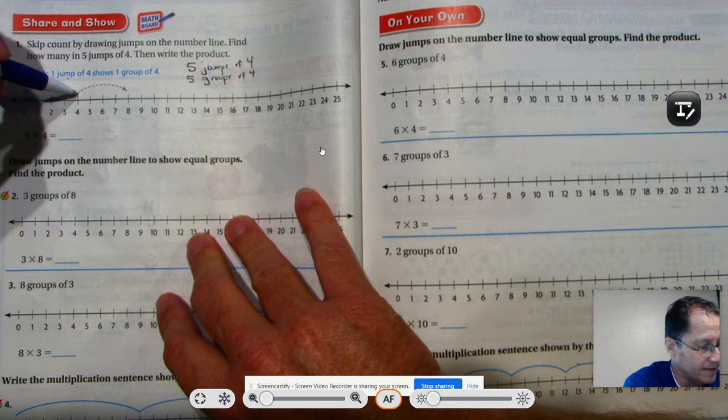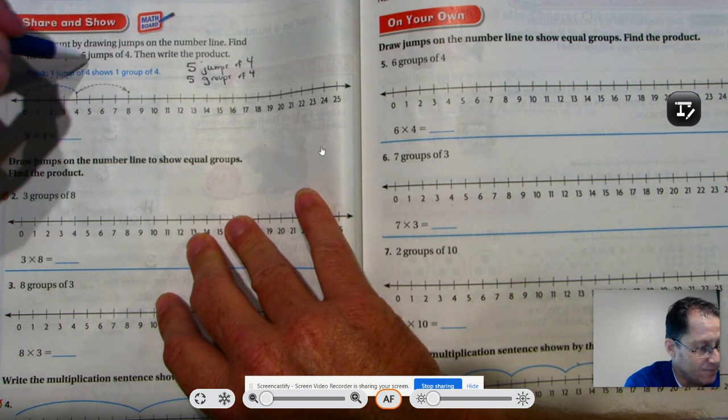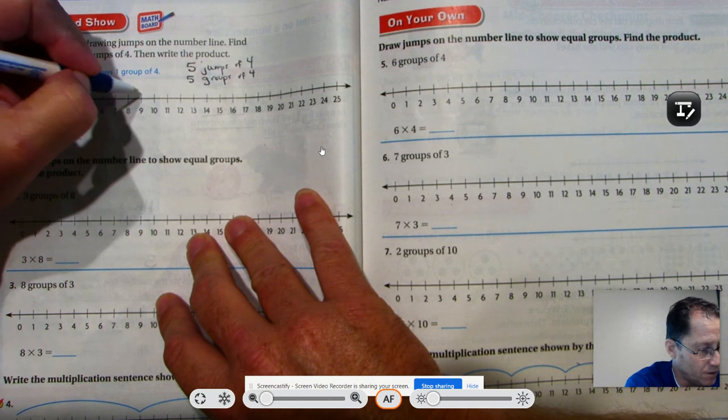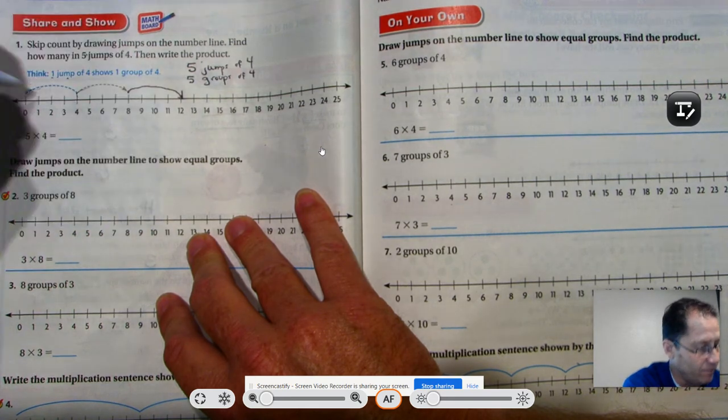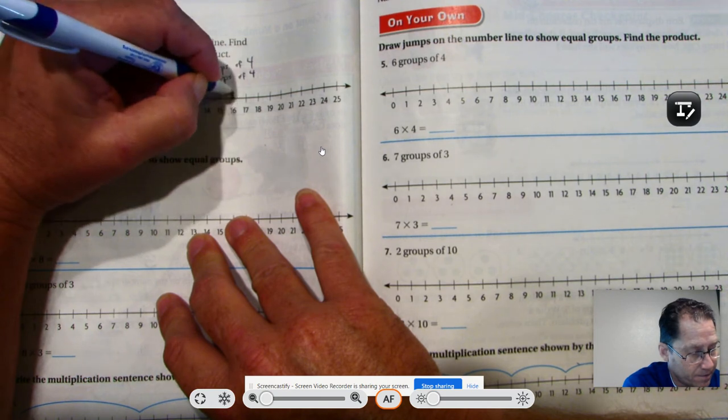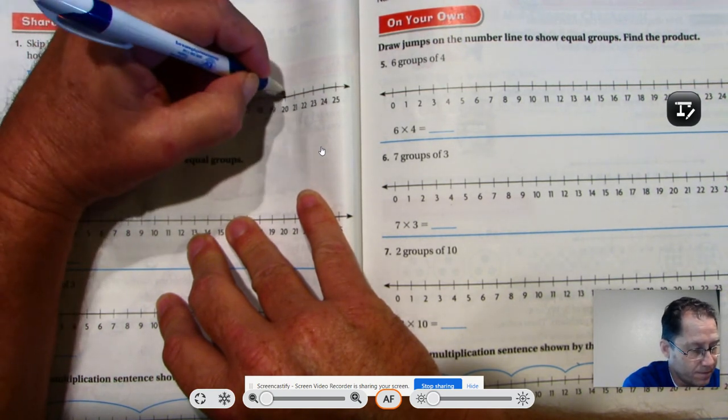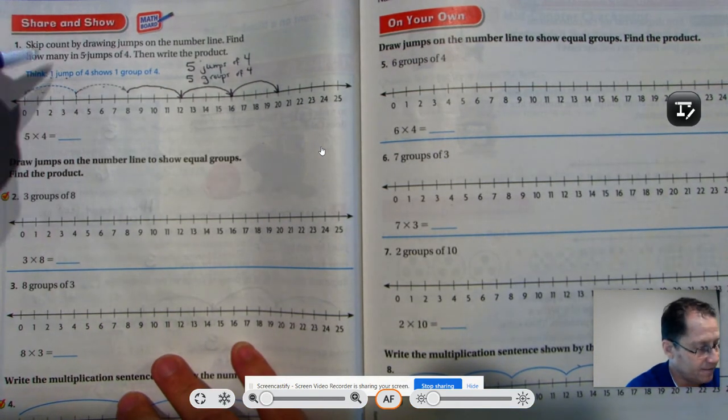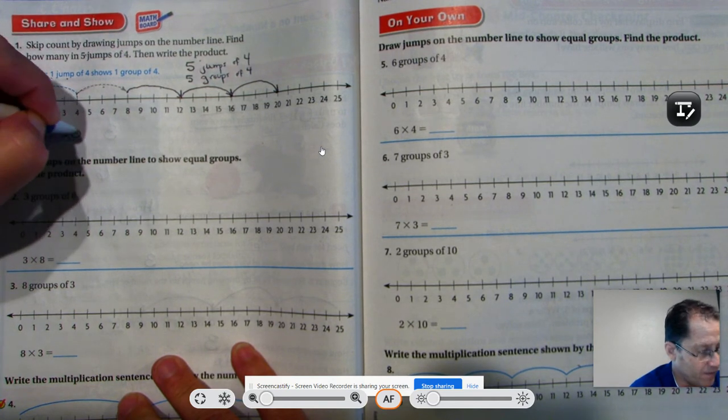So a jump is basically a group on a number line. So here's one, we stop at four. They added four more and they're at eight. So we need to keep going. We need to do five jumps. Right now that's two: one, two, three, four. We have three jumps, four jumps, five jumps. So five jumps. There's one, two, three, four in each group. And we stop at 20.